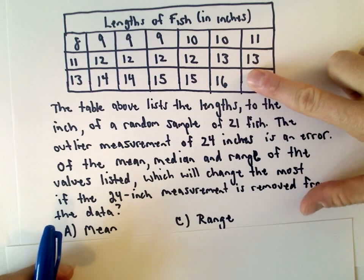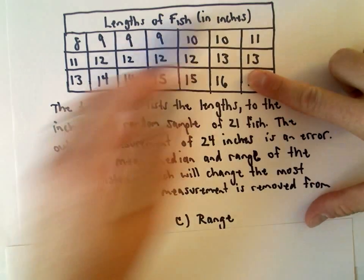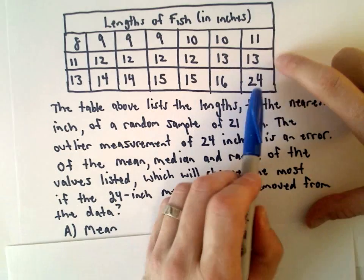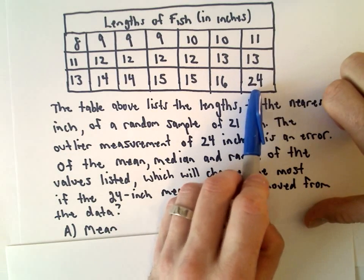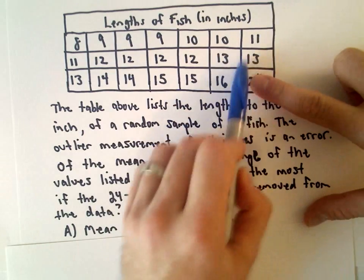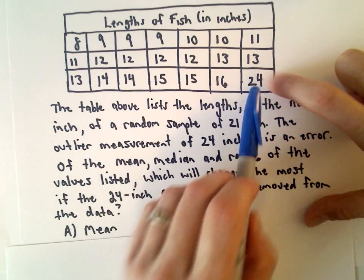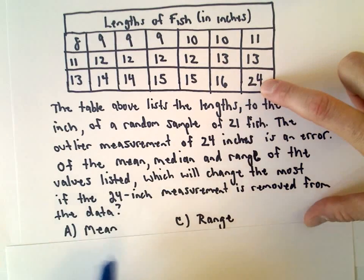You're going to throw out the 24 and then compute the average. It's certainly going to impact it if you throw out the 24 because that's a large measurement, but you have a lot of other measurements already, so by throwing out the 24 it shouldn't really change the mean very much at all.